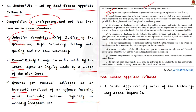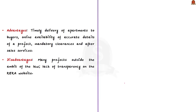RERA establishes a tribunal called the Real Estate Appellate Tribunal. If any person is not satisfied with an order made by the authority, they can appeal before this appellate tribunal. The pros of the act include timely delivery of apartments to buyers, online availability of accurate project details, and mandatory clearance and after-sales services. The main cons include many projects still outside the ambit of RERA, lack of transparency, and issues with the RERA website.